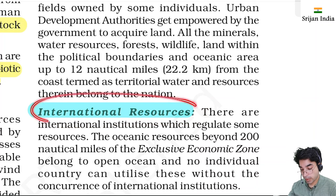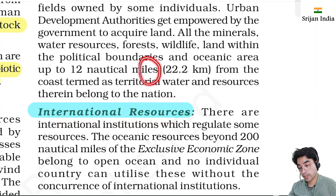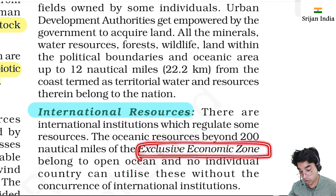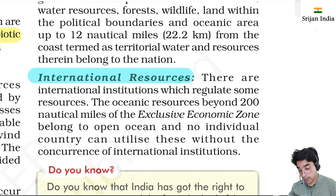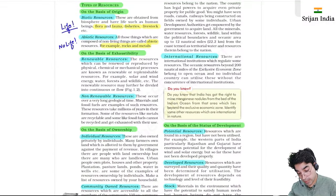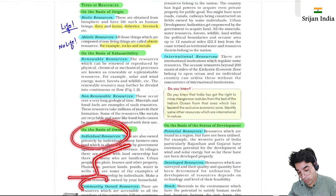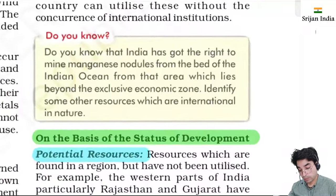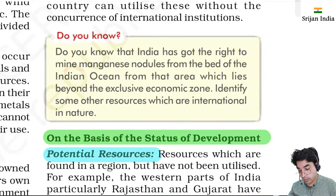International resources are those that belong to no country - they are global commons regulated by international institutions. The exclusive economic zone extends to 200 nautical miles; beyond that, no individual country can utilize resources without the concurrence of international institutions. So from individual to community to national to international - this is the classification based on ownership.